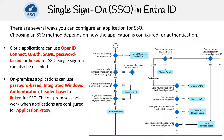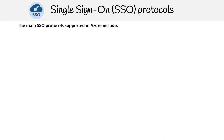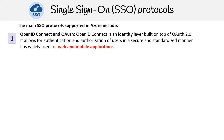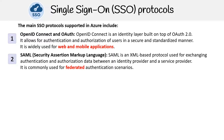This flowchart can help you decide which SSO method is best for your situation. The main SSO protocols supported in Azure include OpenID Connect and OAuth. OpenID Connect is an identity layer built on top of OAuth 2.0, allowing for authentication and authorization of users in a secure and standardized manner. SAML is an XML-based protocol used for exchanging authentication and authorization data between an identity provider and a service provider, and is commonly used for federated authentication scenarios.